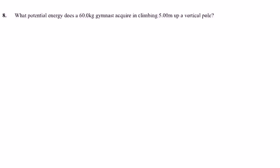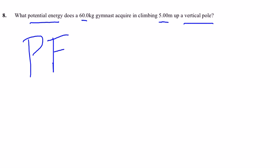It's asking me about potential energy. I'm given mass, and I'm given a distance, which also could be height, especially because you see 'vertical' there, so you could say that's height. Alright, so potential energy is equal to MGH.